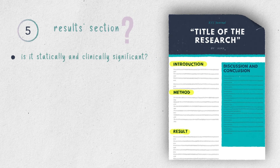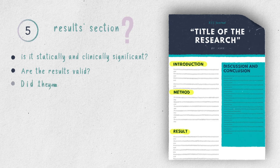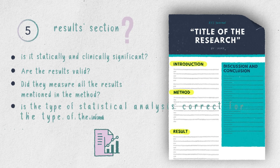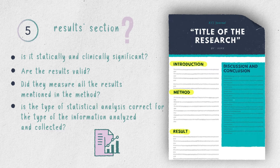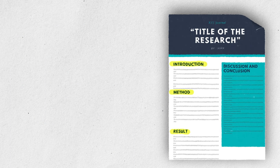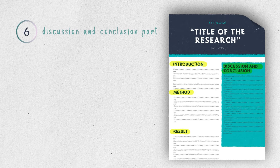Step 5 is to check in the results section whether the research question was answered or not, and whether results are statistically and clinically significant. Are the results valid? Did they measure all the results mentioned in the method? Is the type of statistical analysis correct for the type of information analyzed and collected? Now we dig deep into results and limitations, which is the last step in the discussion and conclusion part.